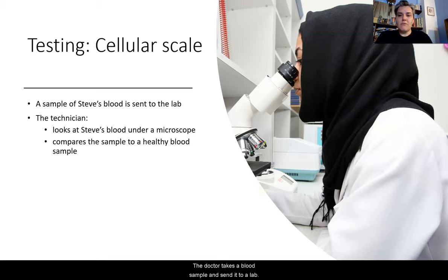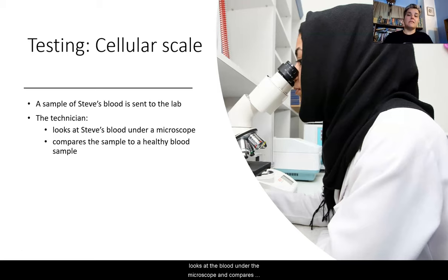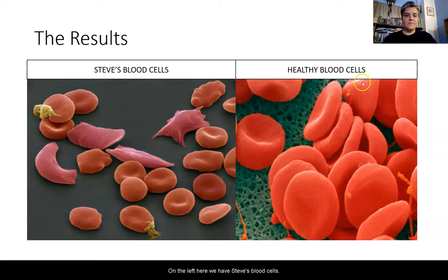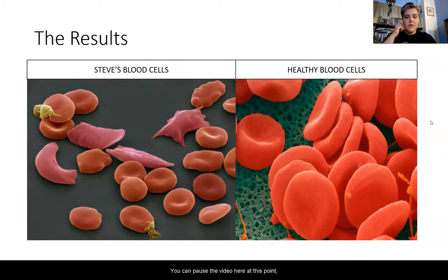The doctor takes a blood sample and sends it to a lab. At the lab, the technician looks at the blood under the microscope and compares that sample to a healthy sample. On the left we have Steve's blood cells, and on the right we have healthy blood cells. You can pause the video here to take a closer look at the differences between these two.